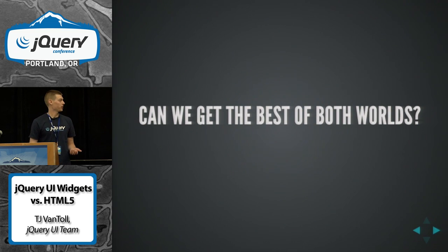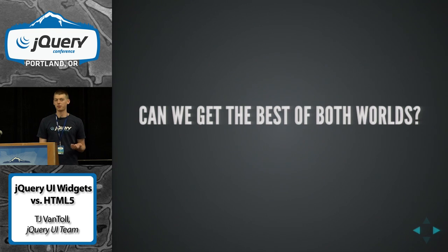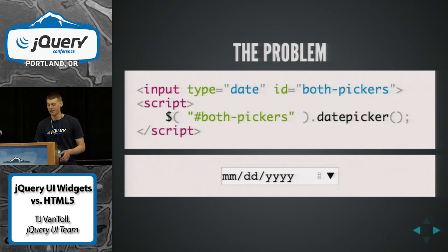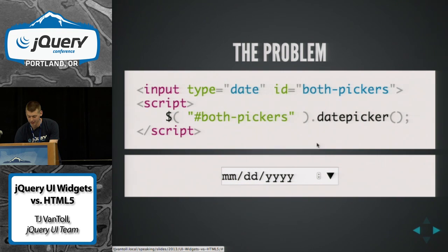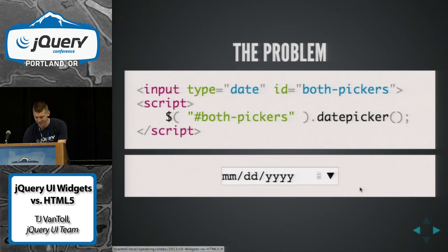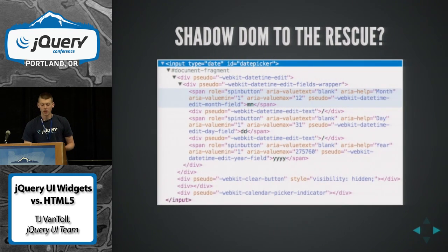The next question that usually comes up is: can we get the best of both worlds? I like the date validation that's really nice, but I also want the customizable widget. The problem with the naive approach is: I have an input of type date and I call datepicker on it — what could go wrong? It turns out you get this kind of double calendar thing. The native one actually does still work, but then the jQuery UI one kind of does nothing.